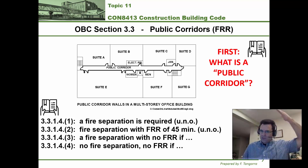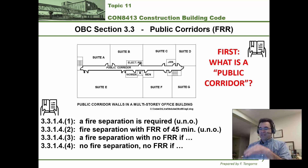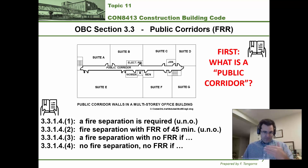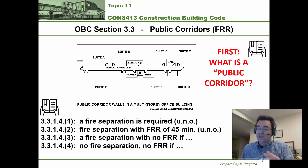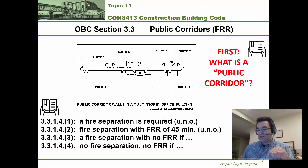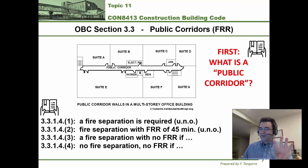Under sentence 2, the fire separation must have a fire rating of 45 minutes if it meets those requirements. Under sentence 3, a fire separation is allowed to have no fire rating for a corridor if those requirements are satisfied. And under sentence 4, no fire separation and no fire rating is allowed if the requirements of sentence 4 are met.